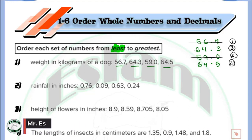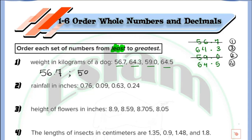So rewrite the numbers now. The first number will be 56.7. After that, we have 59.0. The next one will be 64.3. And the last one will be 64.5.